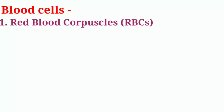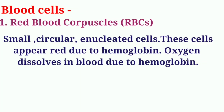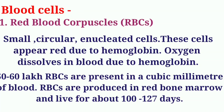Red blood corpuscles (RBCs) are small, circular, and disc-shaped cells that appear red due to hemoglobin. Oxygen dissolves in blood due to hemoglobin. 50 to 60 lakh RBCs are present in a cubic millimeter of blood. RBCs are produced in red bone marrow and live for about 100 to 127 days.